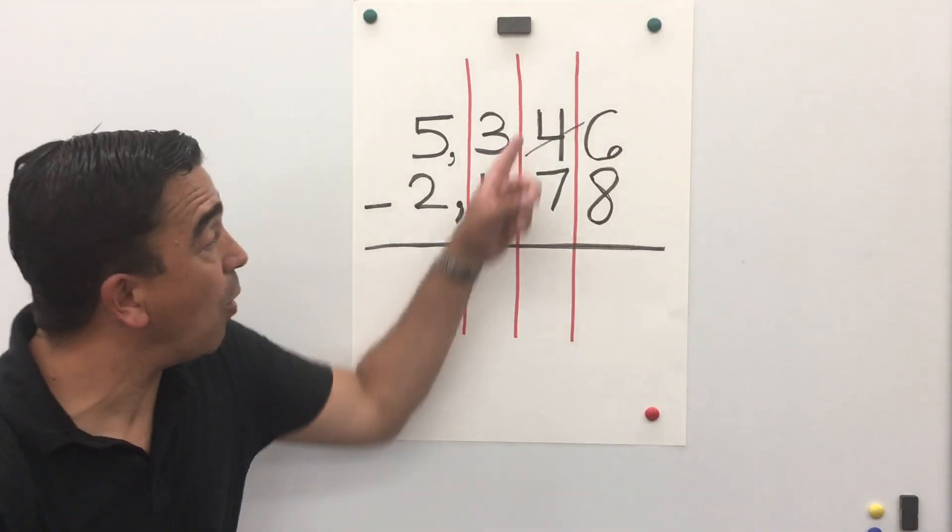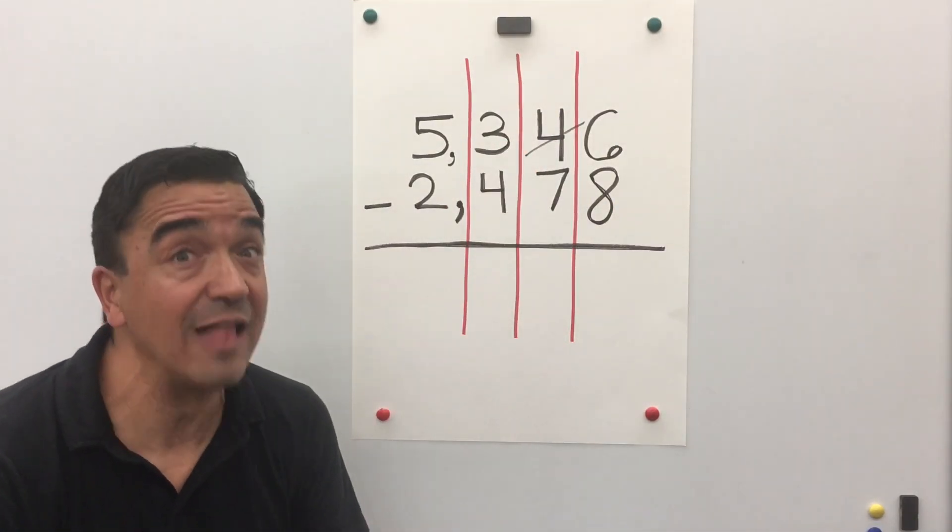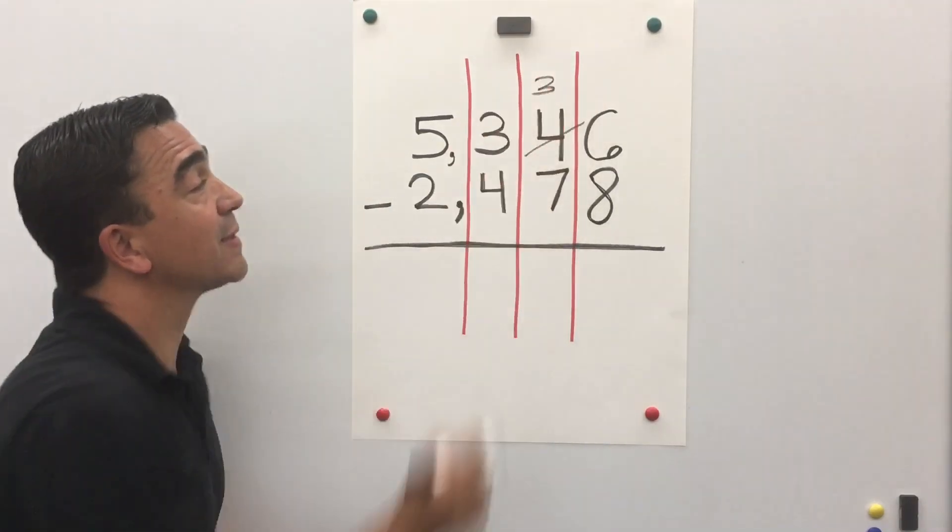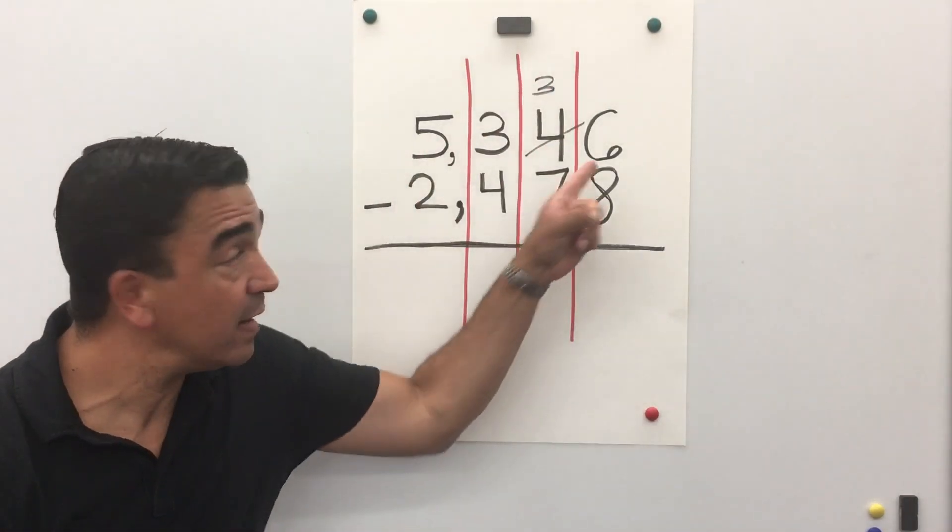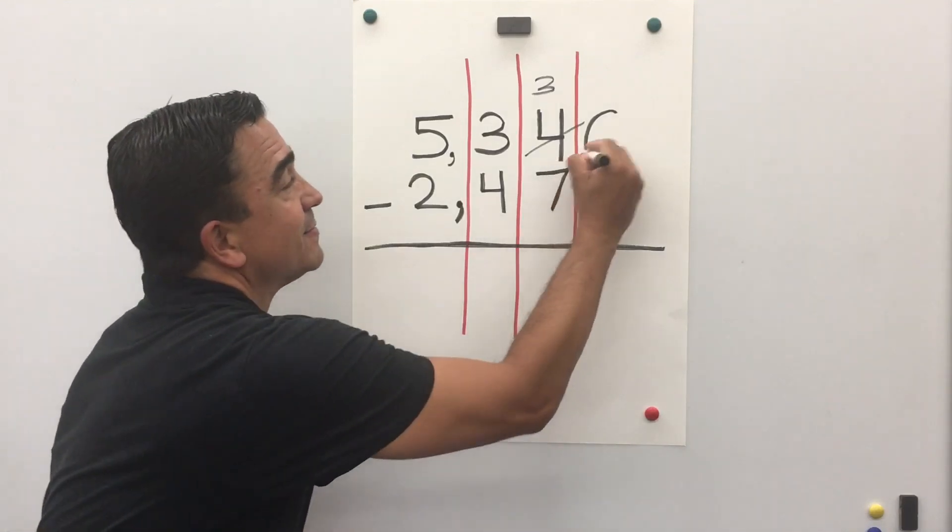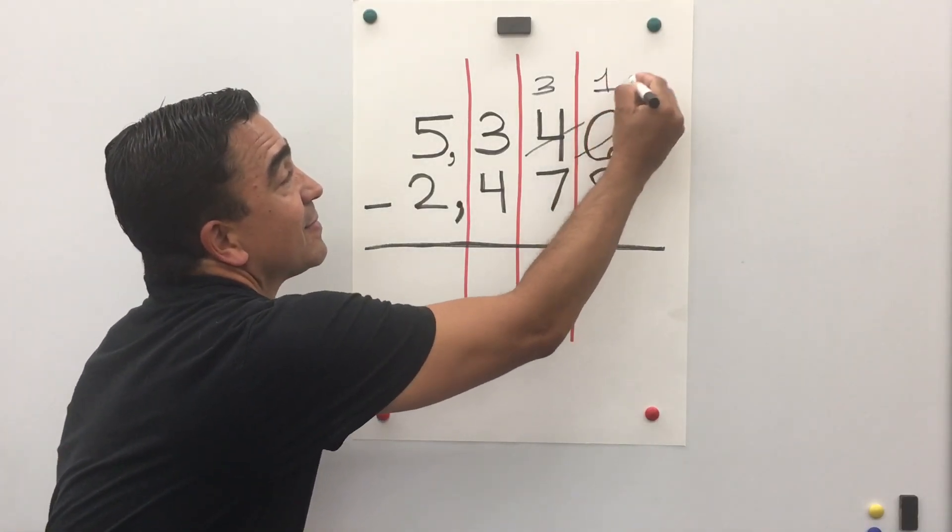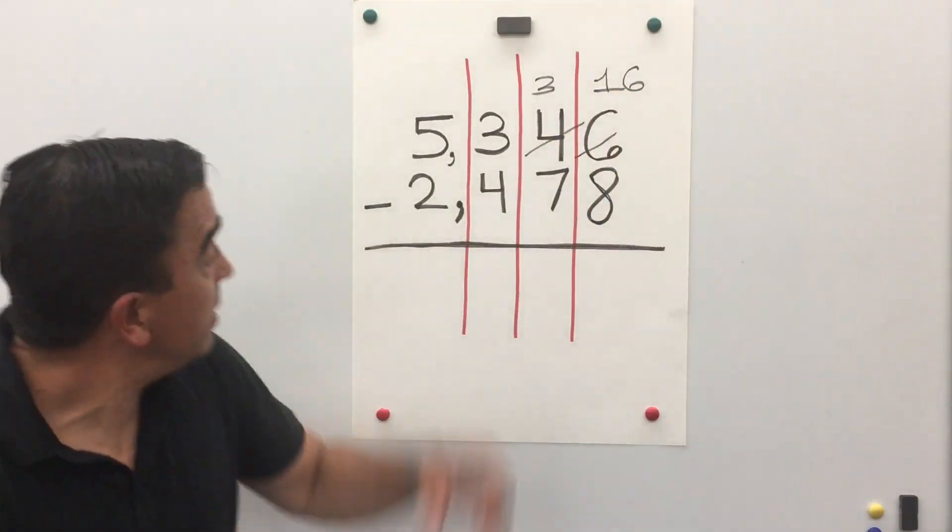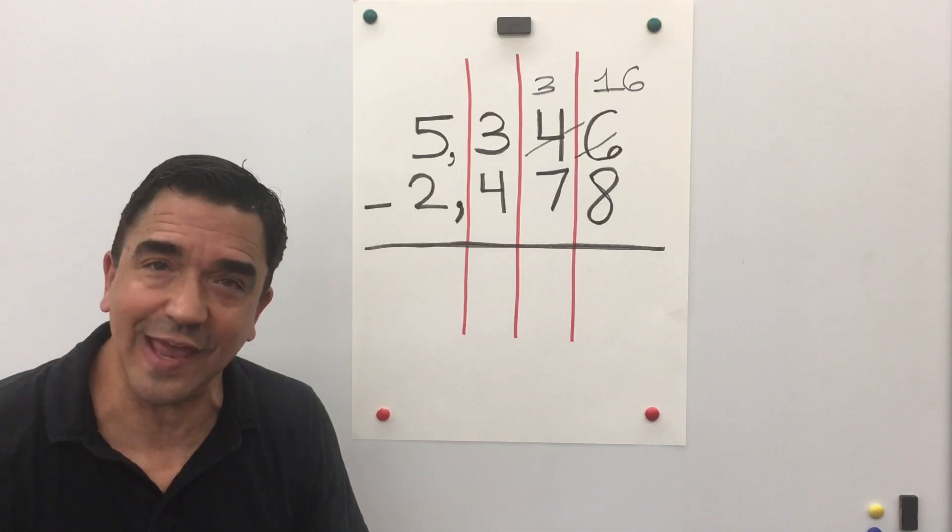We're gonna take away one ten and that leaves three tens. And we're gonna add that one ten to six ones and we get 16. 16 minus 8 is 8.